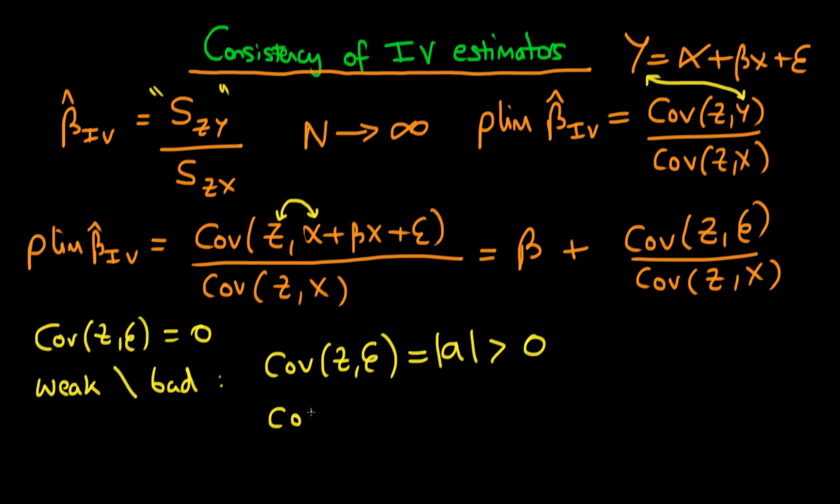And also we have the fact that the covariance of Z with X is some small number B, which is around zero, but only just different from zero.